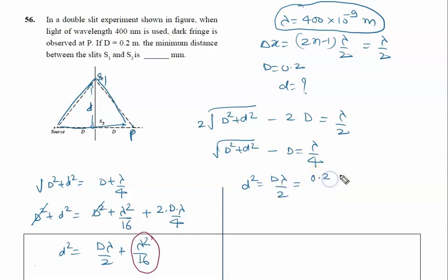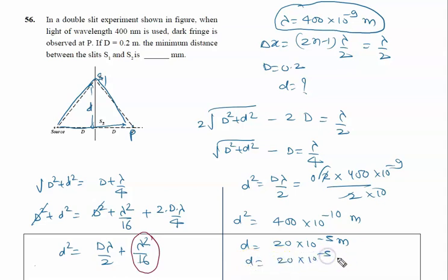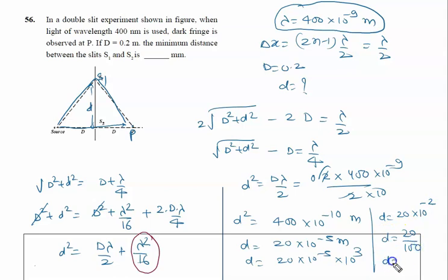Substituting D = 0.2 m and λ = 400 × 10⁻⁹ m: d² = (0.2 × 400 × 10⁻⁹) / 2 = 400 × 10⁻¹⁰ m². Taking the square root: d = 20 × 10⁻⁵ m. Converting to millimeters (multiplying by 10³): d = 20 × 10⁻² mm = 0.2 mm. The right answer is 0.2 millimeter.